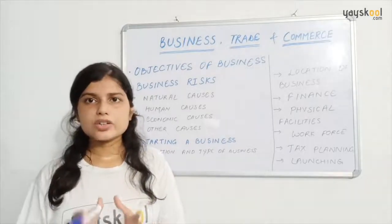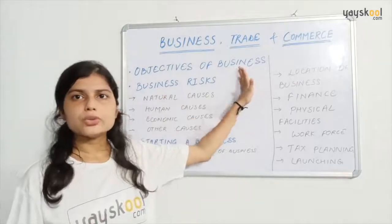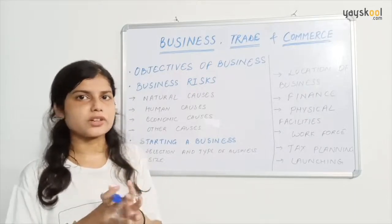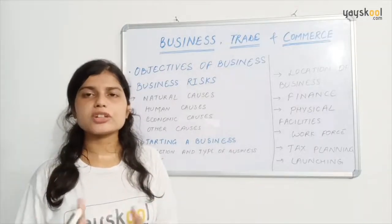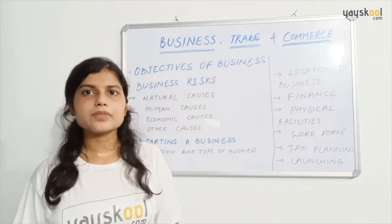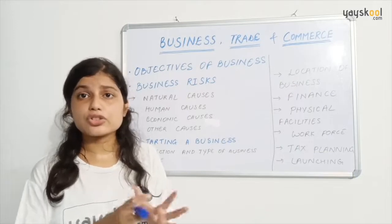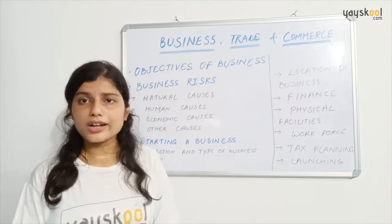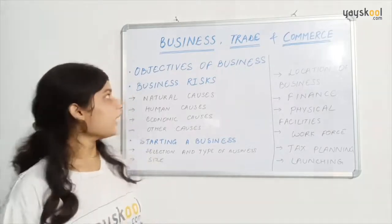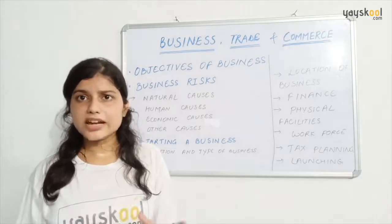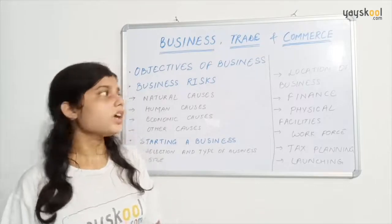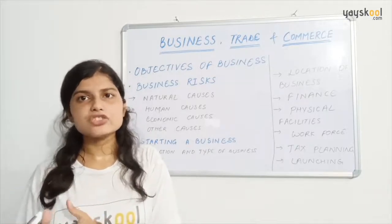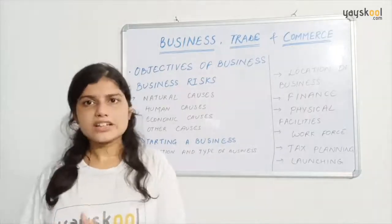Let's take a quick revision. All business organizations have objectives and all individuals involved work towards their attainment. Objectives can be human, social, economic, or national. These include earning profits, social welfare, payment of government dues, social responsibility, providing quality goods at reasonable prices, optimum utilization of resources, and employment generation. Regarding business risks: risk can be speculative — with chances of both profits and losses, like changes in technology and fashion — or pure risk, with only chances of losses, like natural calamities.